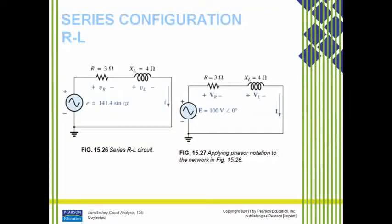We will study the series RL circuit configuration. We need to find: (1) total impedance, (2) current, (3) voltage across each component, (4) power delivered to the circuit, and (5) power factor. In this RL circuit, R and L are connected in series.